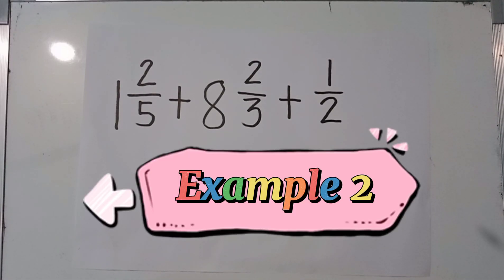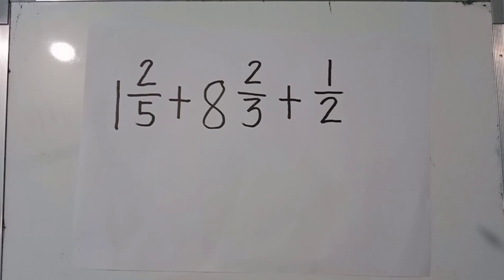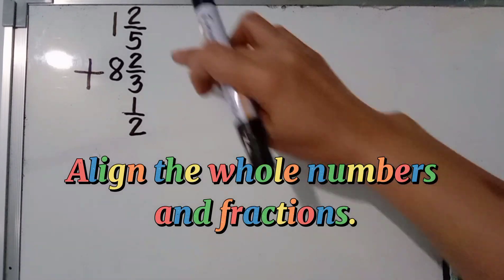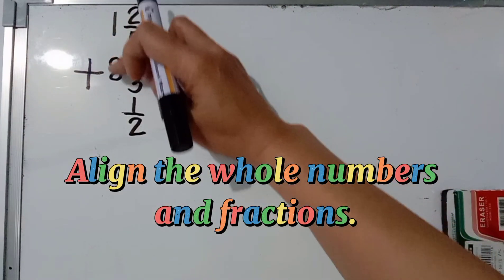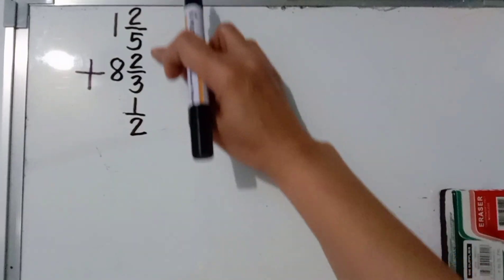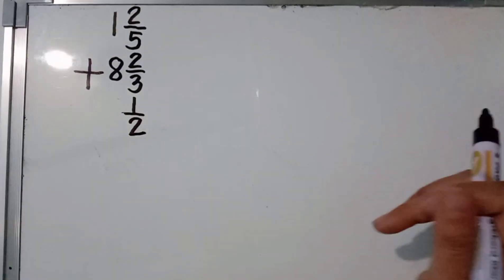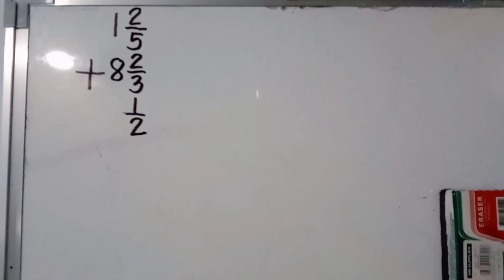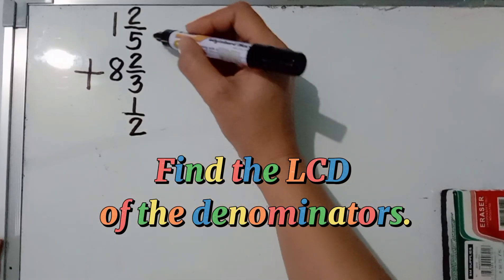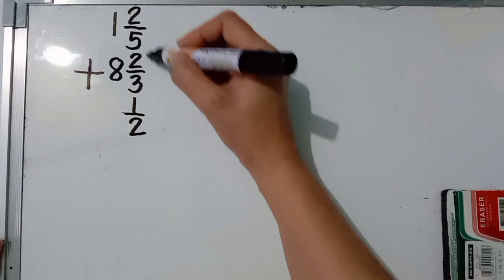Next example: 1 and 2 fifths plus 8 and 2 thirds plus 1 half. The first step is to align the fractions and the whole numbers. The whole numbers are aligned, and the fractions are aligned as well.